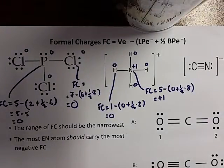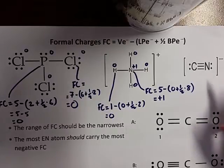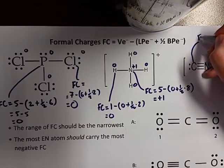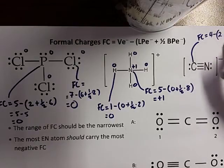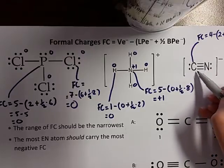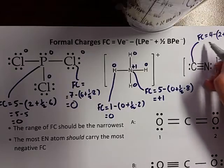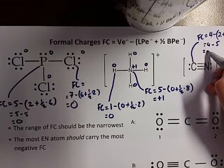Why don't you pause this video for a moment and try it for yourself for the two atoms in the cyanide molecule. Now looking at this polyatomic ion, carbon's formal charge equals — carbon usually has four valence electrons — minus how many lone pair electrons, which is two, plus a half times the bonding electrons, which we have six. That equals four minus five, which gives us an answer of minus one.